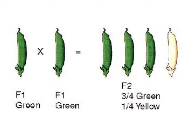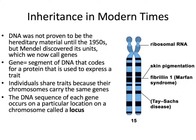We're going to look at some vocabulary and basic genetics. DNA wasn't proven to be the hereditary material until the 1950s, but Mendel discovered its units, which we now refer to as genes. A gene is a segment of DNA that codes for a protein that is used to express a trait. Individuals who have traits in common carry the same genes.